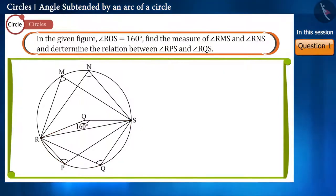And both the angles RMS and RNS are angles subtended by RS to points M and N respectively in the remainder of the circle.